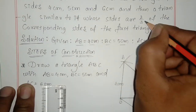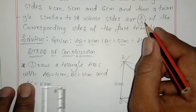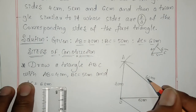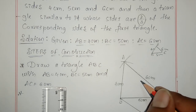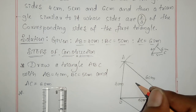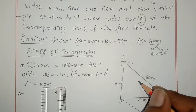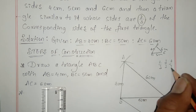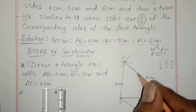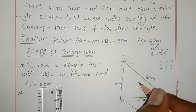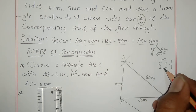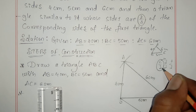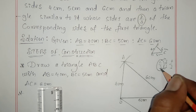Just check: we have to draw two by three of the corresponding sides of the first triangle. Two by three means less than this triangle, because three by three equals this and four by three is greater than this, but two by three is less. So we have to construct a triangle smaller than this. Now, numerator is two and denominator is three — the greater of the two is the denominator, which is three.